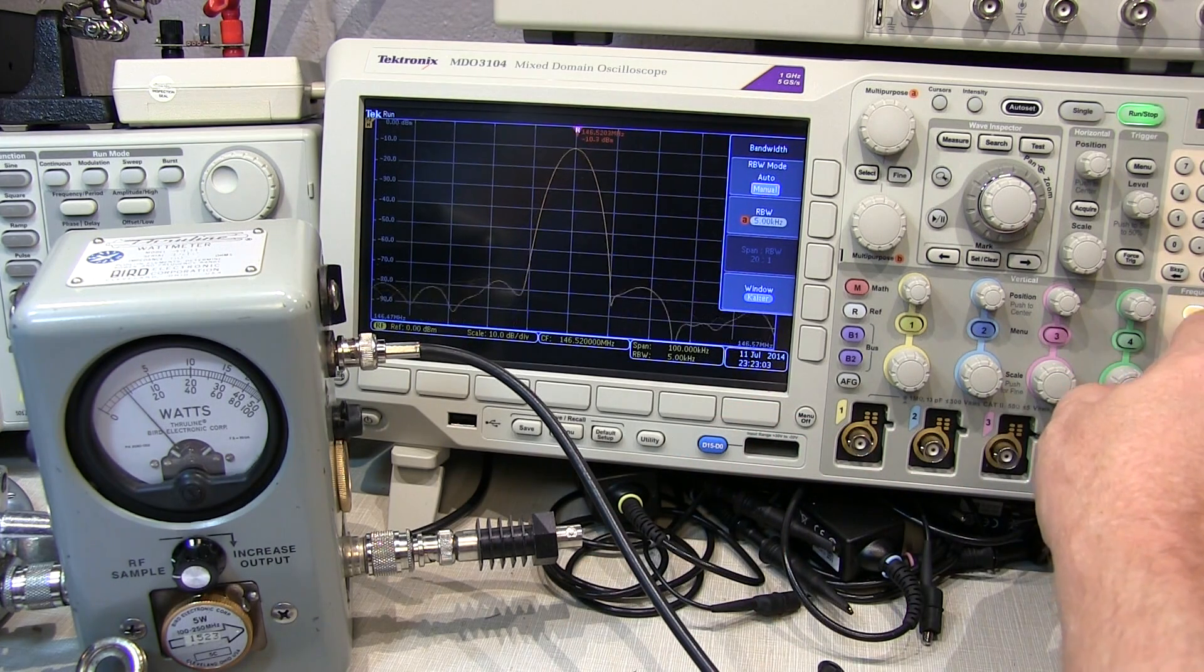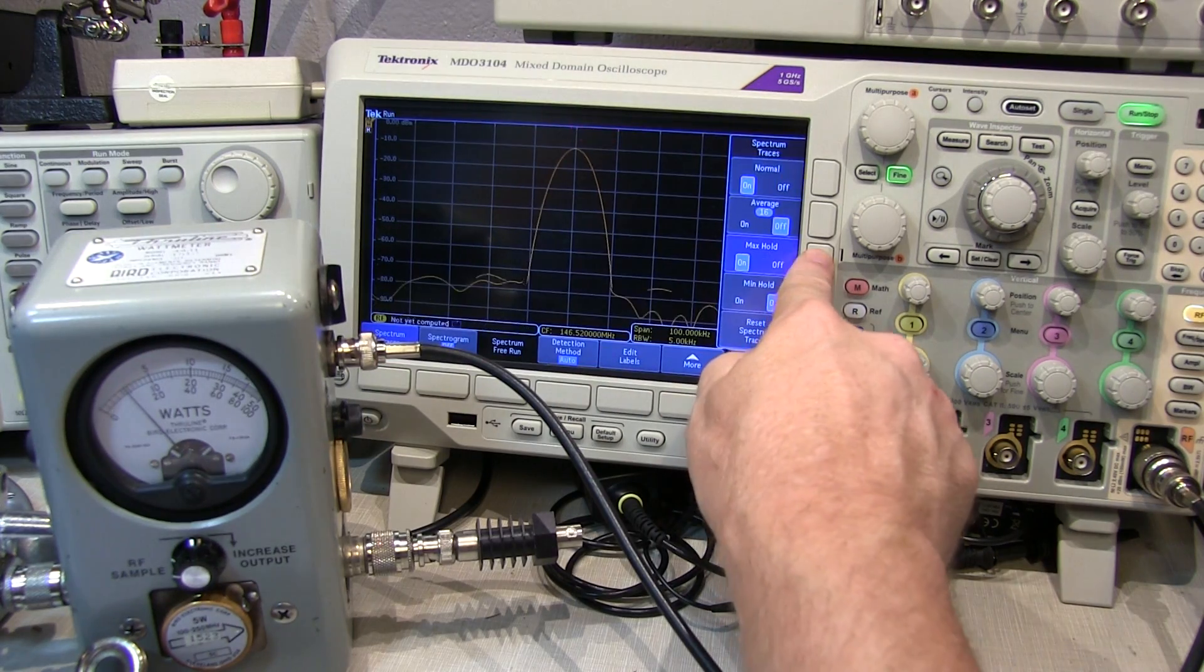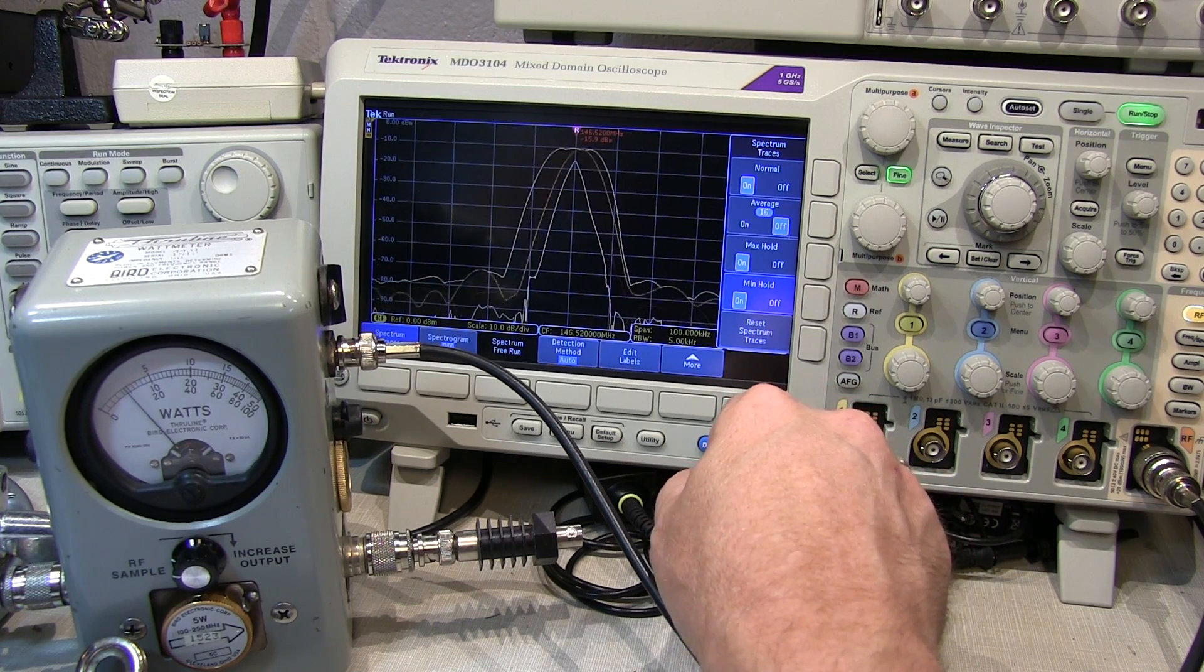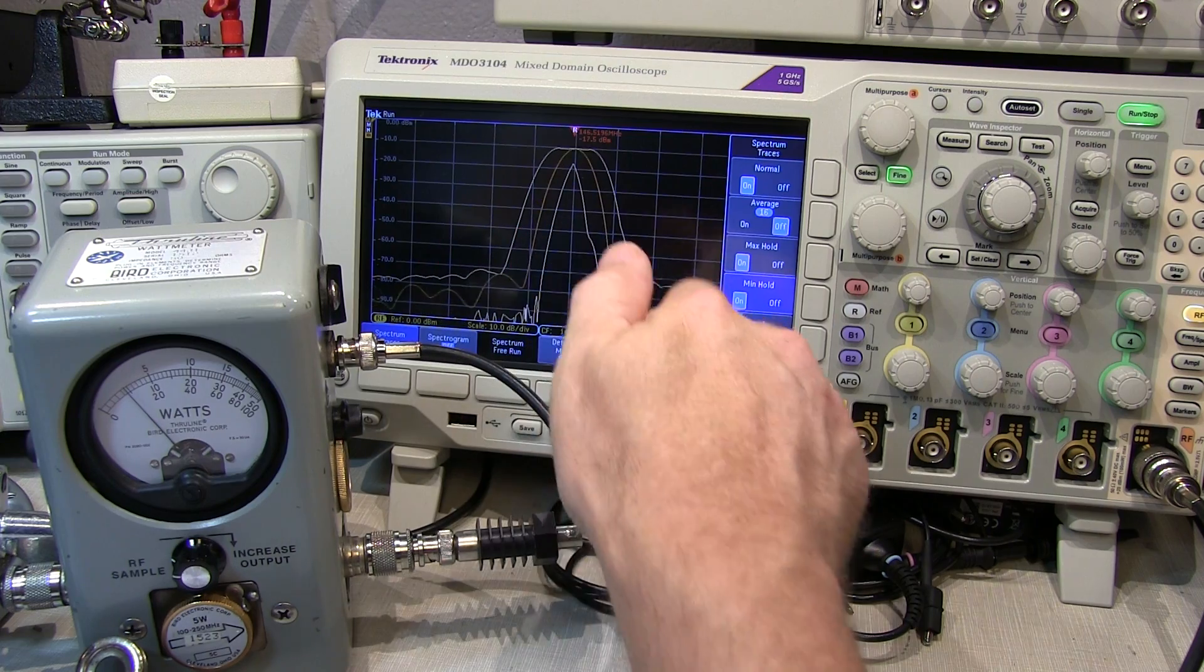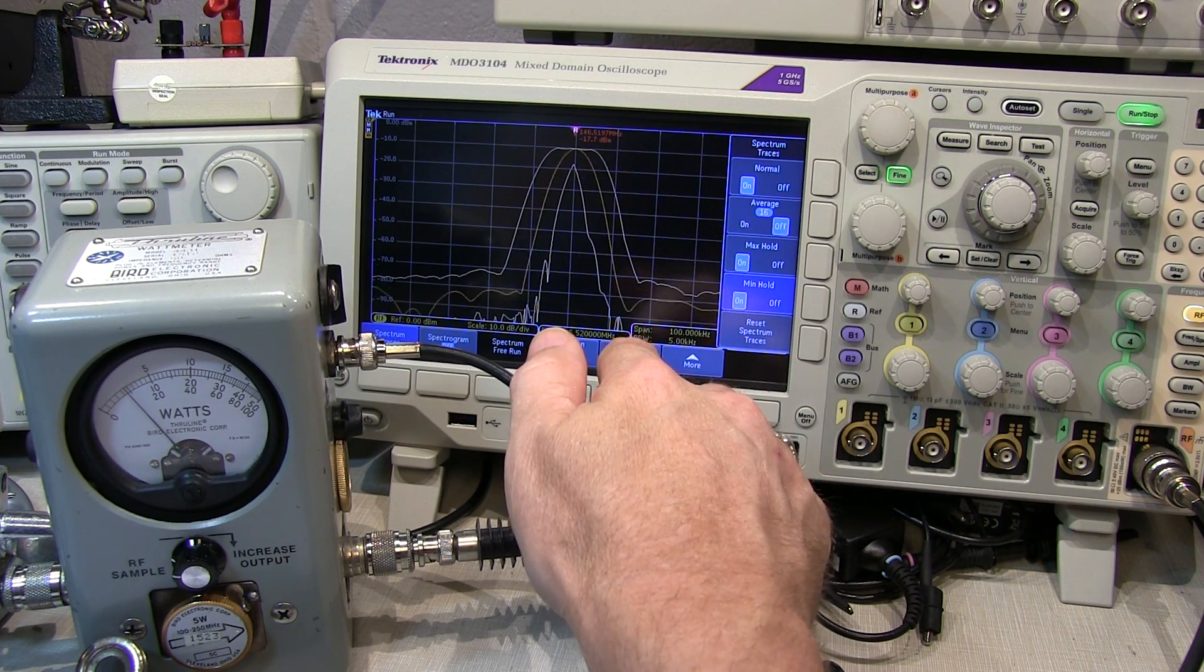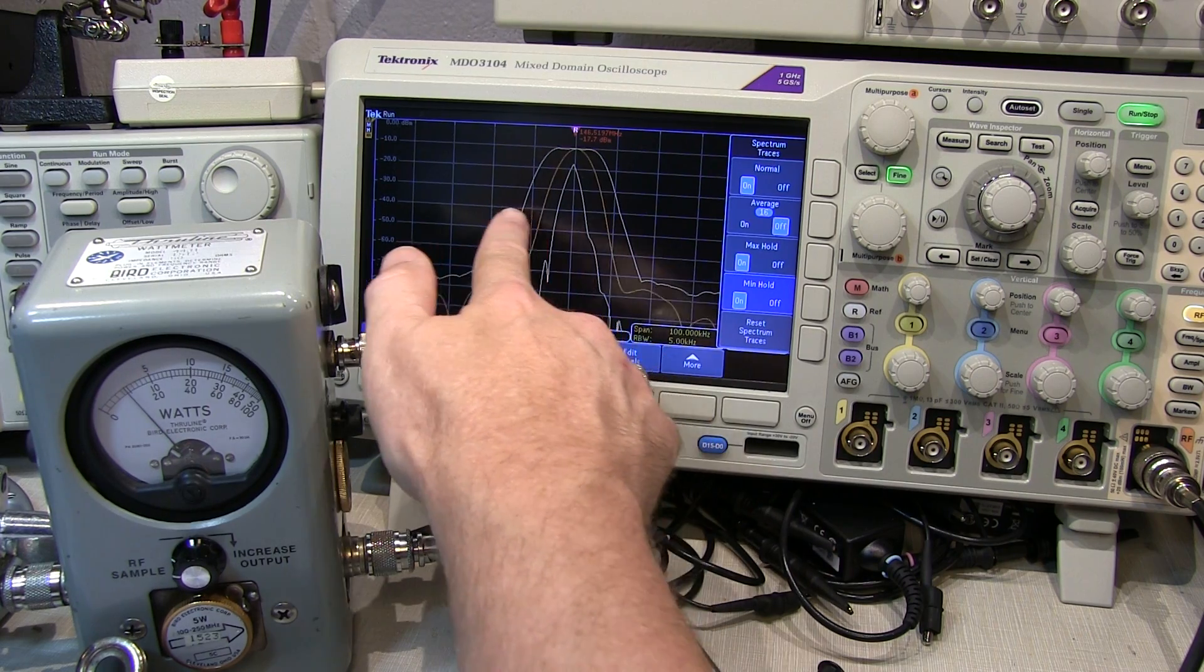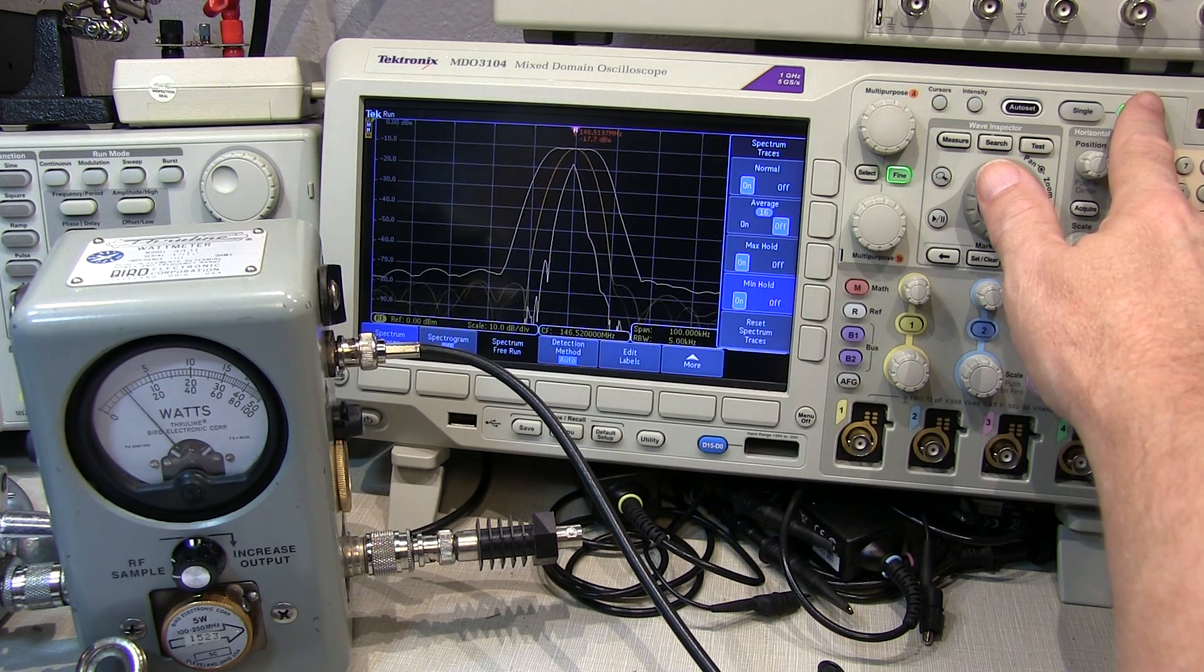Now we'll go to the spectrum traces and turn on a max hold trace and a min hold trace. As we talk into the radio, we can see we're tracing out effectively the envelope of where the frequency deviation is moving. You want to keep doing this until you don't push those lines any further, and then we'll stop the instrument and make the measurement.